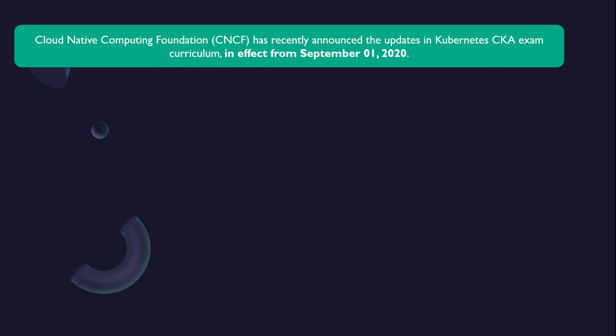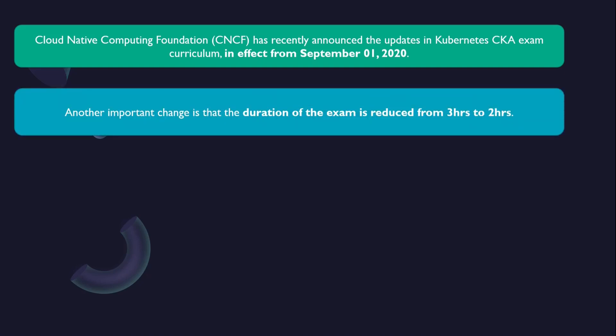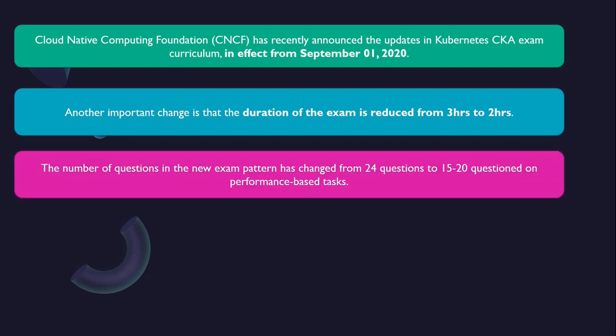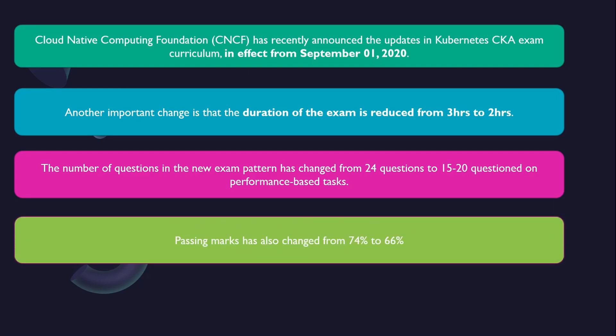Cloud Native Computing Foundation has recently announced updates in the Certified Kubernetes Administrator Exam curriculum, in effect from September 1st, 2020. The duration of the exam has been reduced from 3 hours to 2 hours. The number of questions has changed from 24 questions to 15 to 20 performance-based tasks. The passing marks have also changed from 74% to 66%, so you need to score 66 or above to pass.